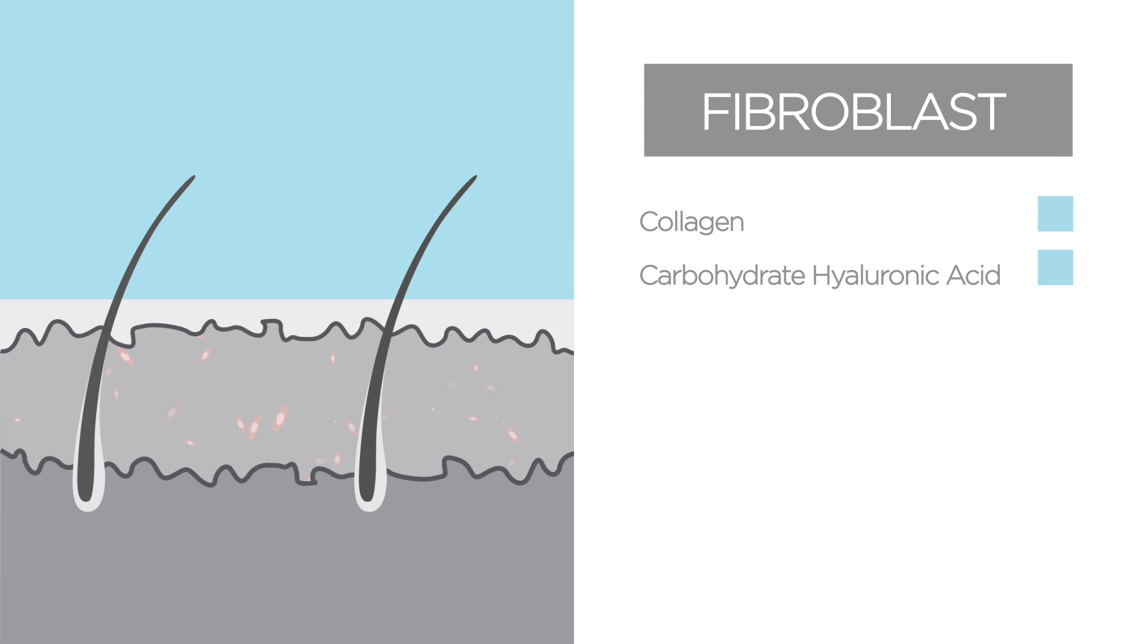For human skin, the most important of these cells is called the fibroblast, which has the ability to produce the protein collagen and the carbohydrate hyaluronic acid.